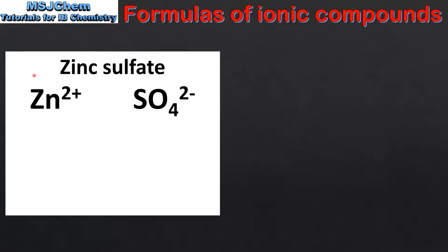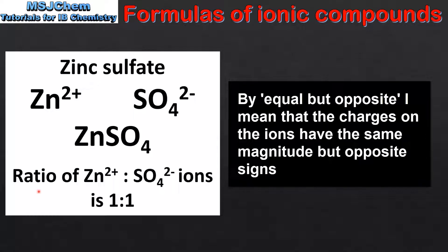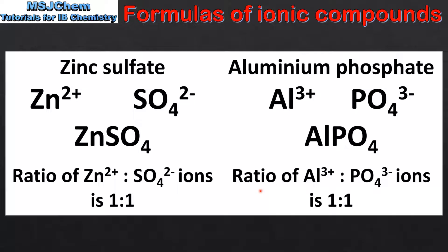Next we look at examples of ionic compounds that contain polyatomic ions. Our first example is zinc sulfate, composed of zinc ions and sulfate ions. Because the charge on the ions is equal but opposite, we need 1 of each ion in a formula unit to make the compound neutral, therefore the formula of zinc sulfate is ZnSO₄, with a ratio of 1 to 1. Next we have aluminium phosphate, composed of aluminium ions and phosphate ions. The charges on the ions are equal but opposite, so we need 1 of each type of ion, therefore the formula is AlPO₄, with a ratio of aluminium ions to phosphate ions of 1 to 1.